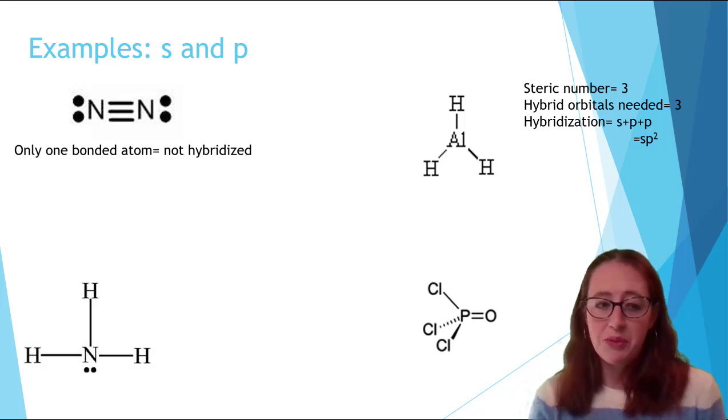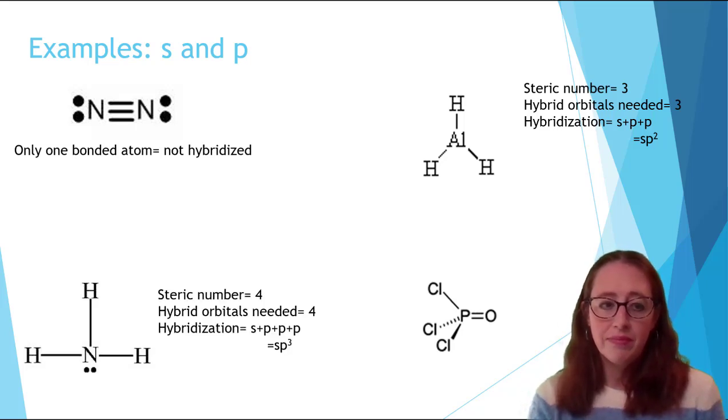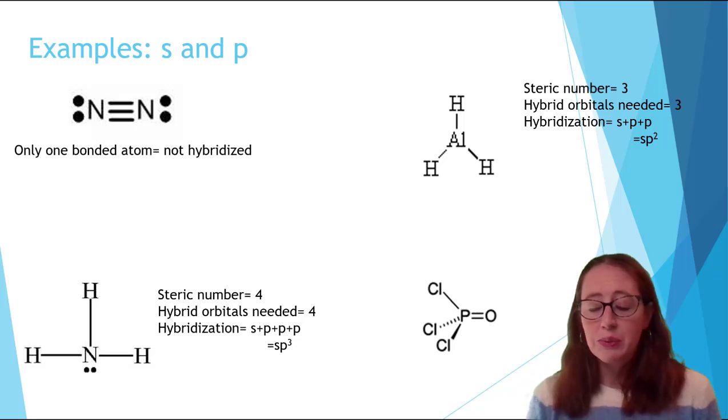Now, let's do NH3. NH3 has three bonded atoms and one lone pair, and so that's a steric number of four. One from the lone pair and one from each hydrogen. This means that the hybrid orbitals needed is four. So we can start counting up from S. S gives us one, so we need three P orbitals, which gives us SP3 hybridized.